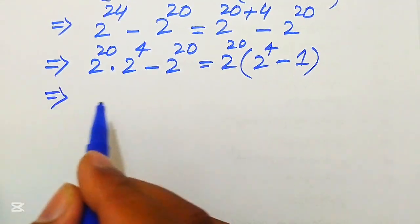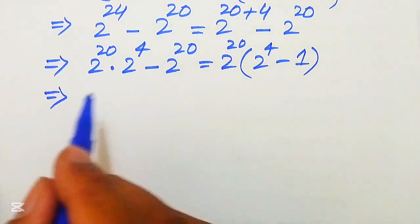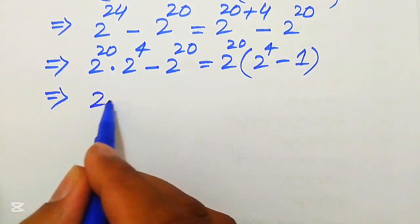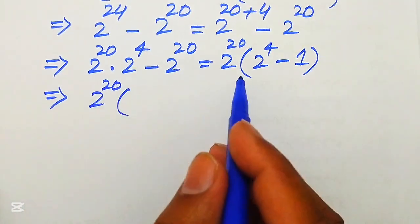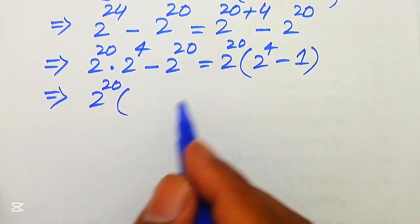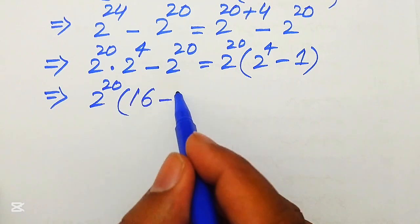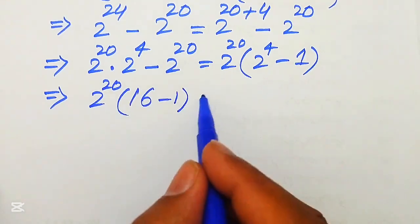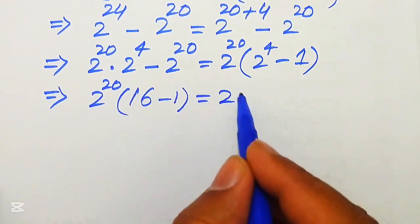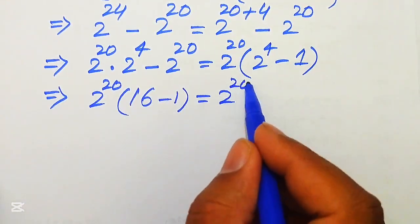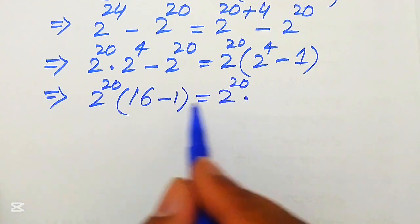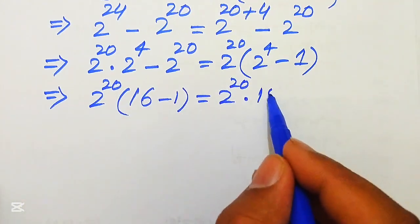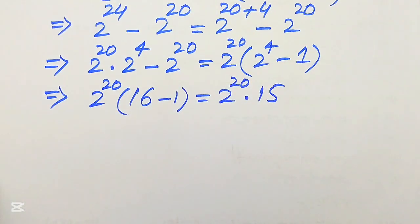In the next step, we know that 2 to the power of 4 equals 16, so 16 minus 1 becomes 15. This gives us 2 to the power of 20 multiplied by 15. We now focus on finding the value of 2 to the power of 20 and then multiply it by 15.